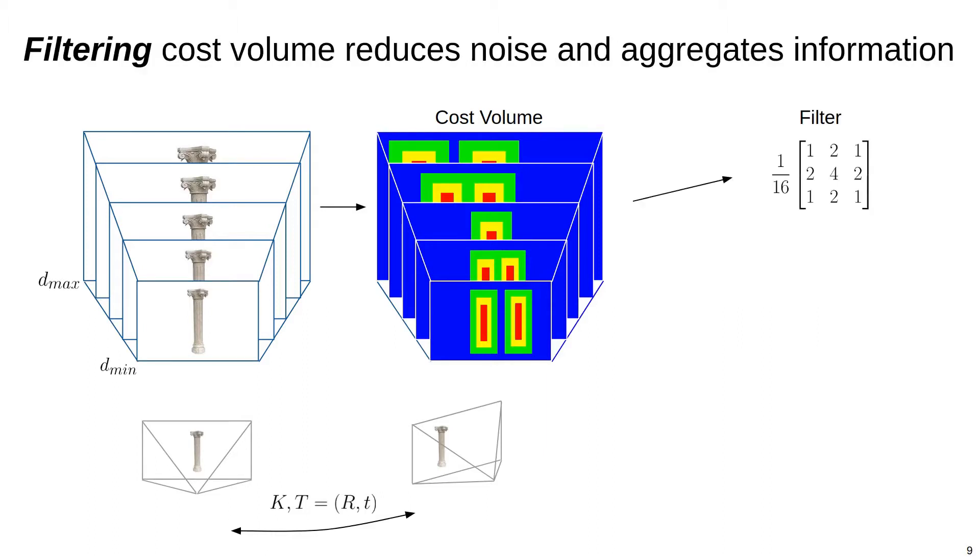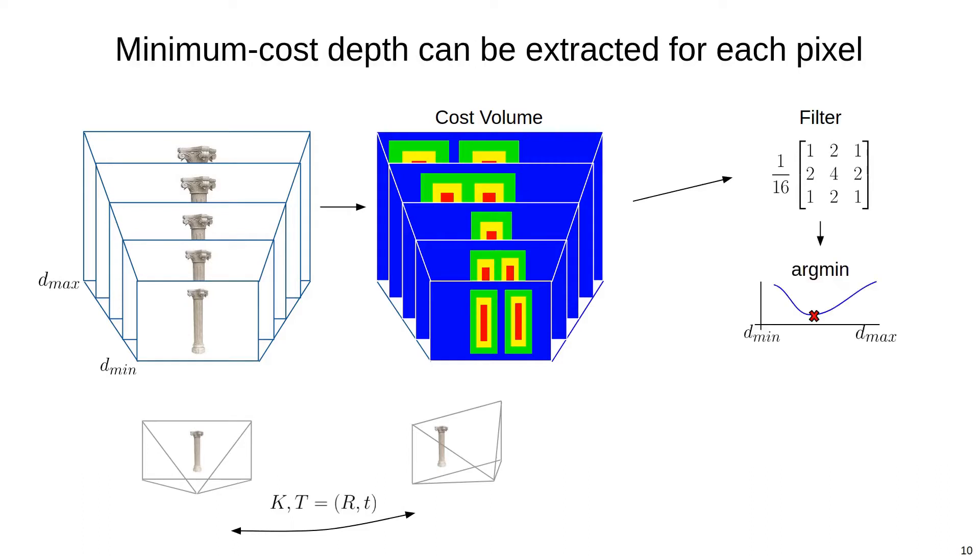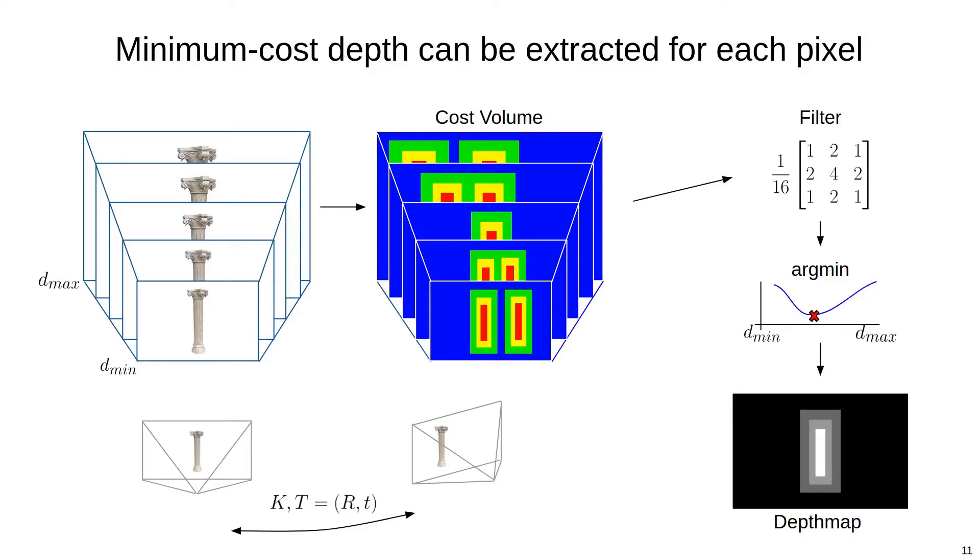Typically, additional filtering is applied to this volume to reduce noise and aggregate cost information. Then, the depth that minimizes the cost for each pixel is computed, which yields a dense depth map in the reference frame.